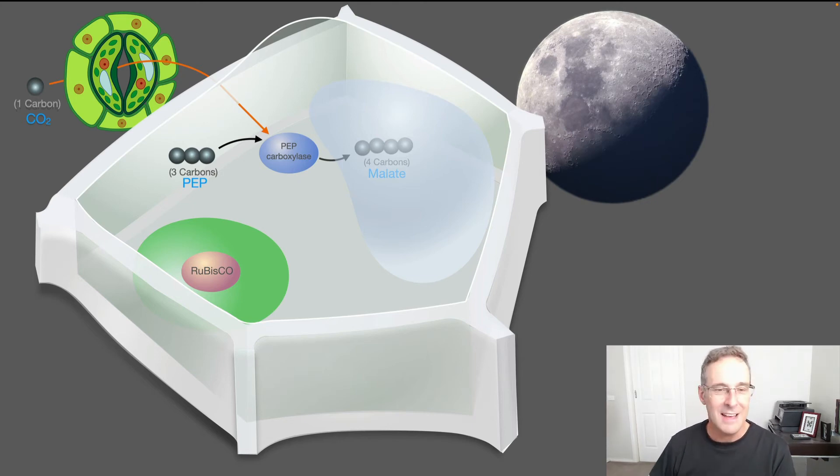Now, notice in my diagram here that I've drawn carbon dioxide as just a single carbon atom. Of course, you know that carbon dioxide has two oxygens as well as that carbon atom. But for simplicity in this diagram, I've ignored oxygen and hydrogen. All these molecules here have hydrogen and oxygen as well. They're all organic molecules. But I'm just drawing the carbons here because I think it really simplifies what happens.